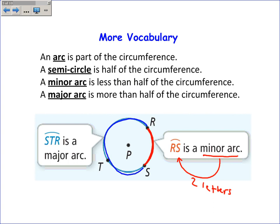A major arc will have three letters. The first letter is where you start, the middle letter is where you go through, and the last is where you end.